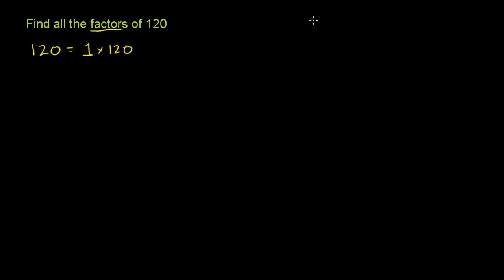So let's write a factors list over here. We just found two factors. Is it divisible by 1? Well, every whole number is divisible by 1, so 1 is a factor at the low end — that's its actual smallest factor. And its largest factor is 120. You can't have something larger than 120 dividing evenly into 120; 121 will not go into 120. So the largest factor on our factors list is going to be 120.